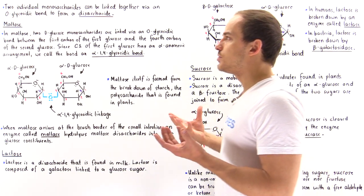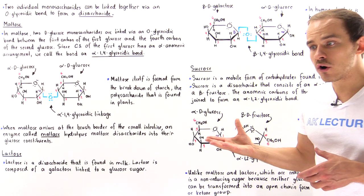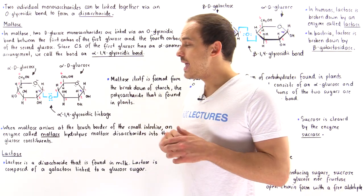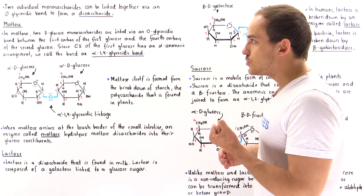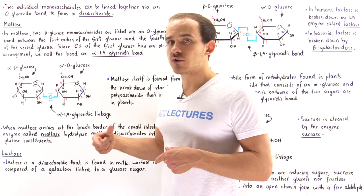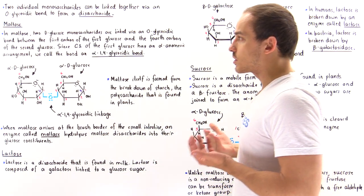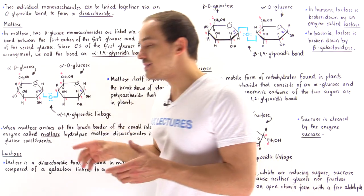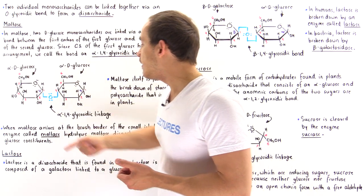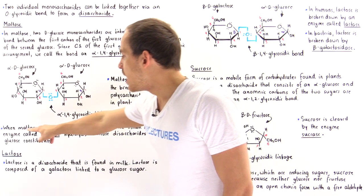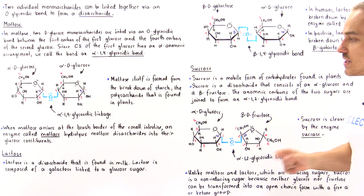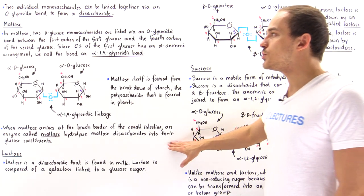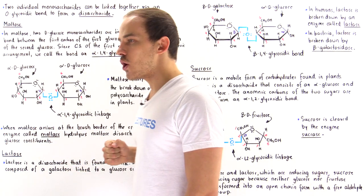Maltose is formed when we break down starch, the polysaccharide stored in plants, which we'll discuss in more detail in the next lecture. When we ingest starch, we break it down into maltose disaccharides. When maltose reaches the brush border of the small intestine, special digestive enzymes called maltase molecules hydrolyze the alpha-1,4-glycosidic bonds within maltose, breaking maltose disaccharides into their individual glucose constituents, which can then be absorbed into the cell.